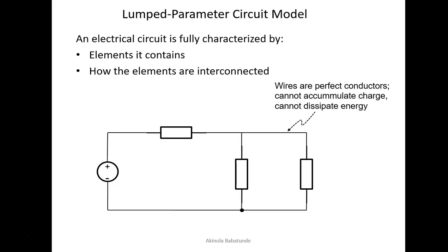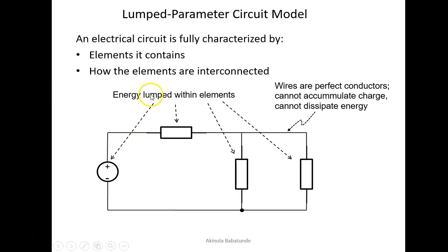Wires are perfect conductors, as we have discussed in previous teachings, and they cannot accumulate charge. They cannot dissipate energy. They only conduct charge or energy from one point to another, and they are not just conductors — they are perfect conductors. As you can see from these arrows, these are lumped elements. It's an element, this is an element, this is an element, and then we have energy that can be lumped within all of these elements.